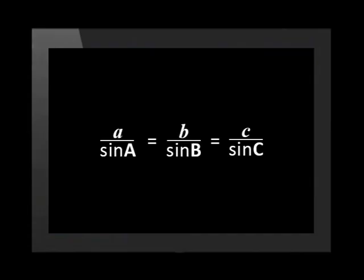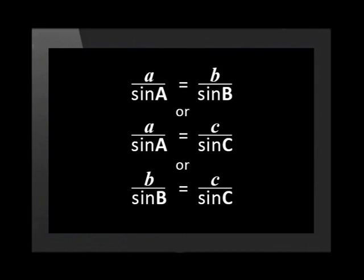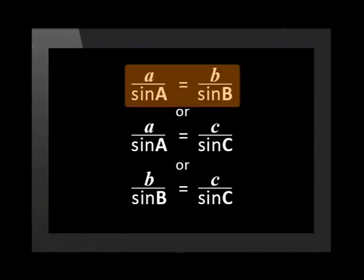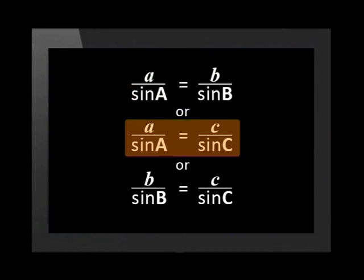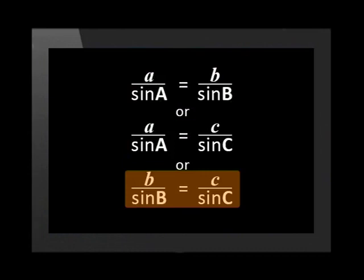The official sine rule is a over sine A is equal to b over sine B is equal to c over sine C. At any given time, we use two of these ratios. That is, a over sine A equals b over sine B, or a over sine A equals c over sine C, or b over sine B equals c over sine C.